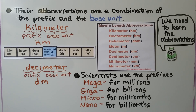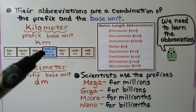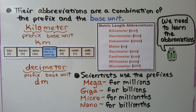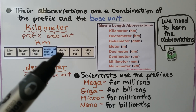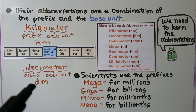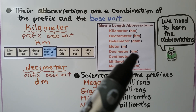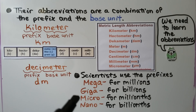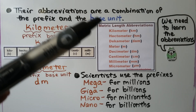Their abbreviations are a combination of the prefix and the base unit. For kilometer, the abbreviation for kilo is K and the abbreviation for meter is M, so kilometer is KM. For decimeter, the prefix deci abbreviates as D, and meter is M, so decimeter is DM. Scientists also use the prefixes mega for millions, giga for billions, micro for millionths, and nano for billionths. We need to learn these abbreviations.